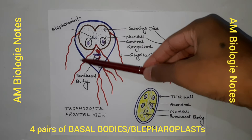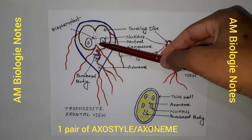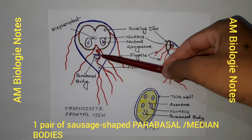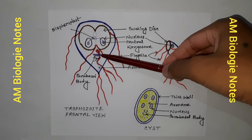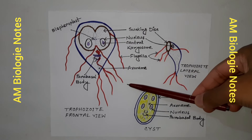Each trophozoite consists of one pair of nuclei, four pairs of flagella, four pairs of basal bodies or blepharoplasts from which the axonemes of flagella arise, one pair of axostyle or axonemes running along the midline, and one pair of sausage-shaped parabasal or median bodies connected to the basal bodies through which the axonemes pass. The trophozoite is motile with a slow oscillation about its long axis, often resembling falling leaves.